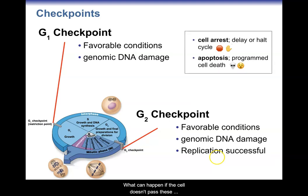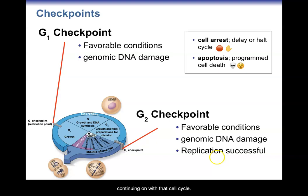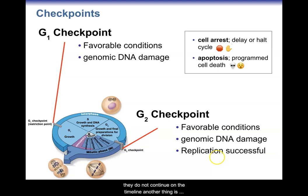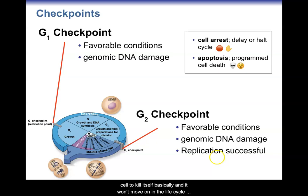What can happen if the cell doesn't pass these checkpoints? The cell can undergo cell cycle arrest — basically stop and delay, no longer continuing on in the cell cycle. Some cells stop even being a normal cell, while others continue normal cell function but do not continue on the timeline. Another outcome is apoptosis, which is just a fancy term for programmed cell death — an event that triggers the cell to essentially kill itself and not move on in the life cycle.